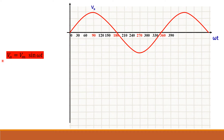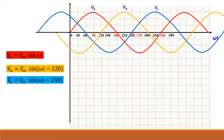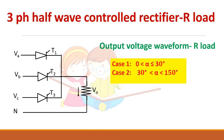Let us draw the three-phase waveform. VB starts at 120°, and VC starts at 240°. For more detail on drawing the three-phase waveform step by step, refer to the previous video on the three-phase uncontrolled rectifier. Note that we are discussing only R load here — for RL load the waveform will change.